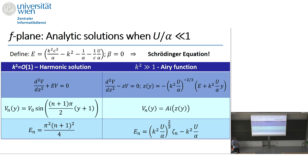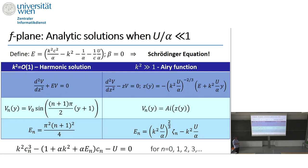Due to the relation between the energy E and the phase speed, we get a cubic equation for the phase speed, from which we can obtain the phase speed for positive and negative Poincaré waves and for the Rossby wave.